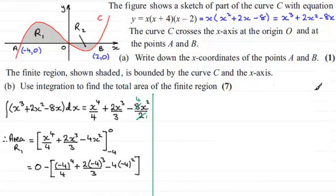What we've got then is that the area R1 equals, well, we've got 0 minus, and then minus 4 to the power of 4 divided by 4 gives us 64. And then for the second term, minus 4 cubed multiplied by 2 divided by 3, that comes to minus 128 thirds. And then the last term here comes to minus 64.